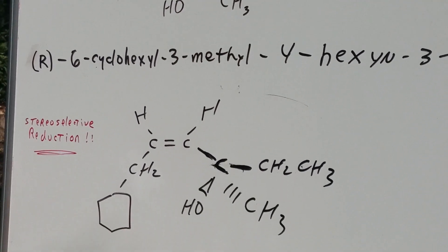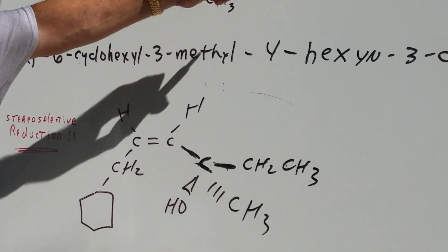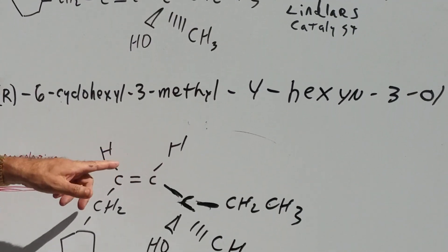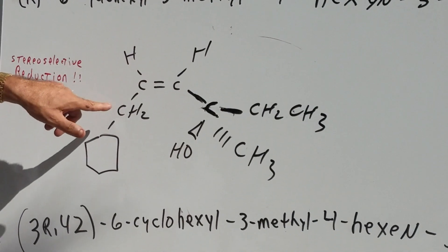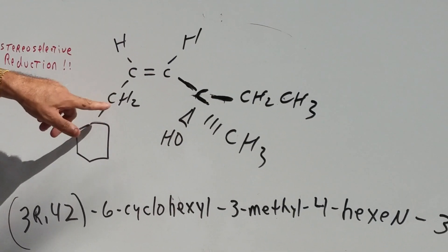Now, you should be able to hit a name like that. Now, what we're going to do is we're going to add two hydrogens from the same face. And by doing that, that would give the Z-alkene.